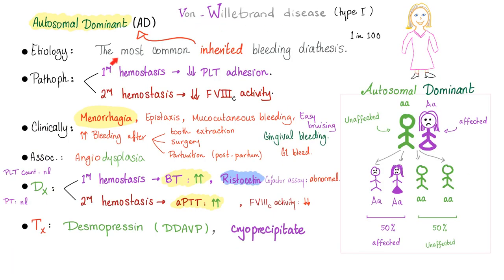Von Willebrand disease is the most common inherited bleeding diathesis. Pathophysiology: we have a dual problem — a primary hemostasis defect with decreased platelet adhesion, and a secondary hemostasis problem because we have decreased factor VIII activity. Not necessarily the level, but the activity is affected. Clinically: menorrhagia, epistaxis, mucocutaneous bleeding, and increased bleeding after tooth extraction, surgery, and parturition.